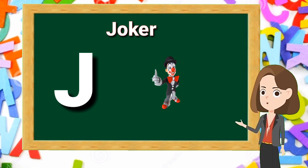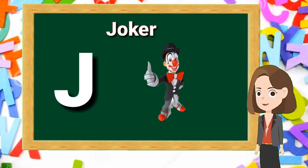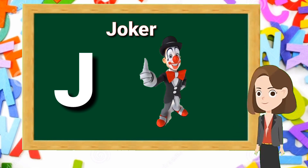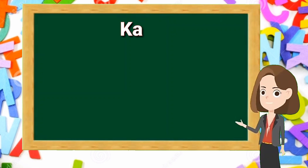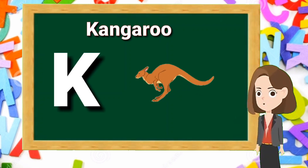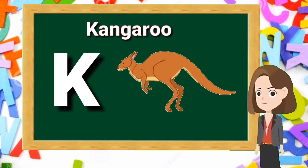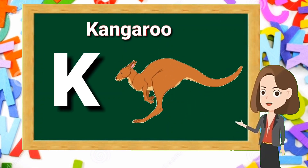A for joker. J, j. Joker. A for kite. G, g. Kite.